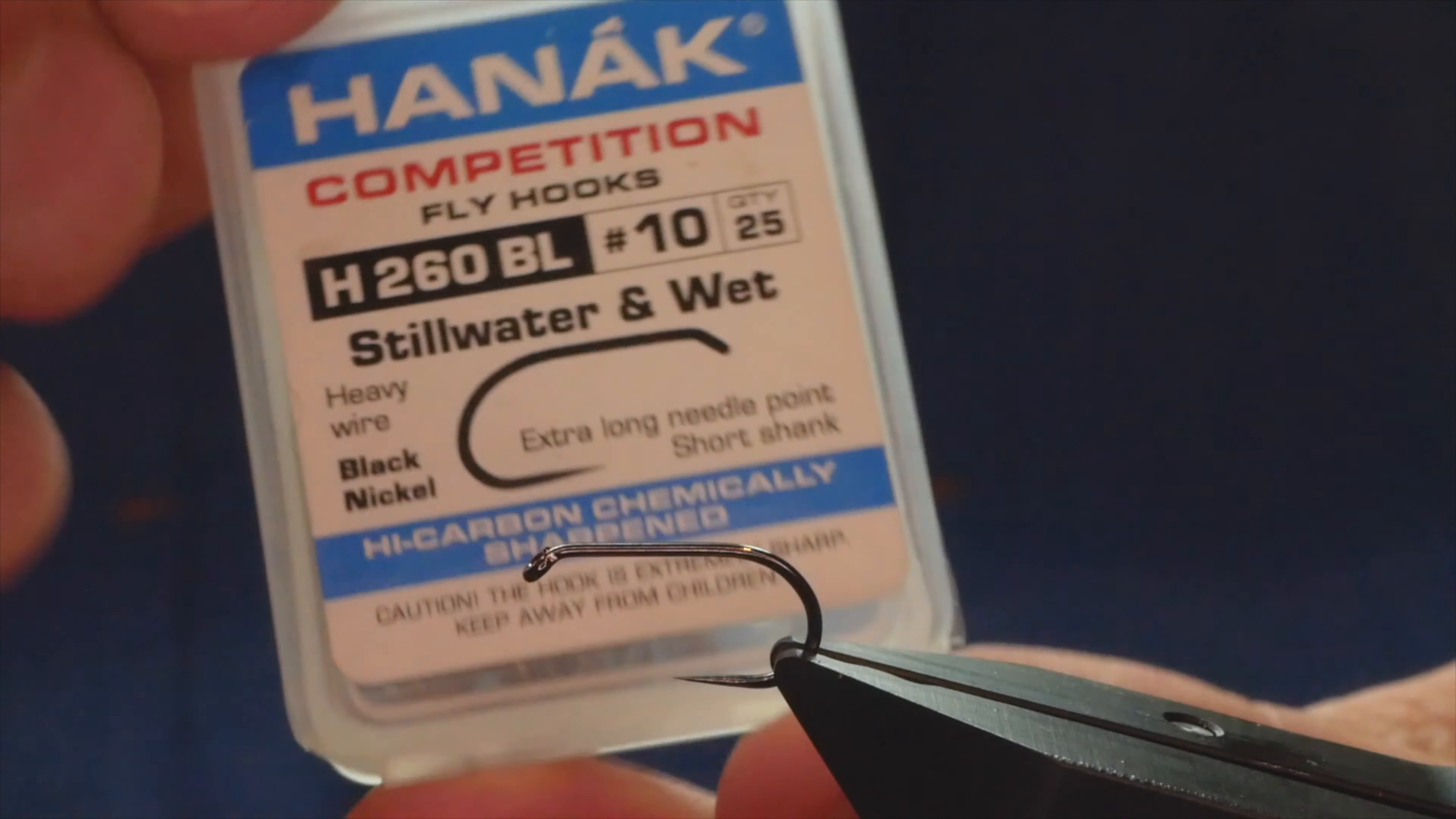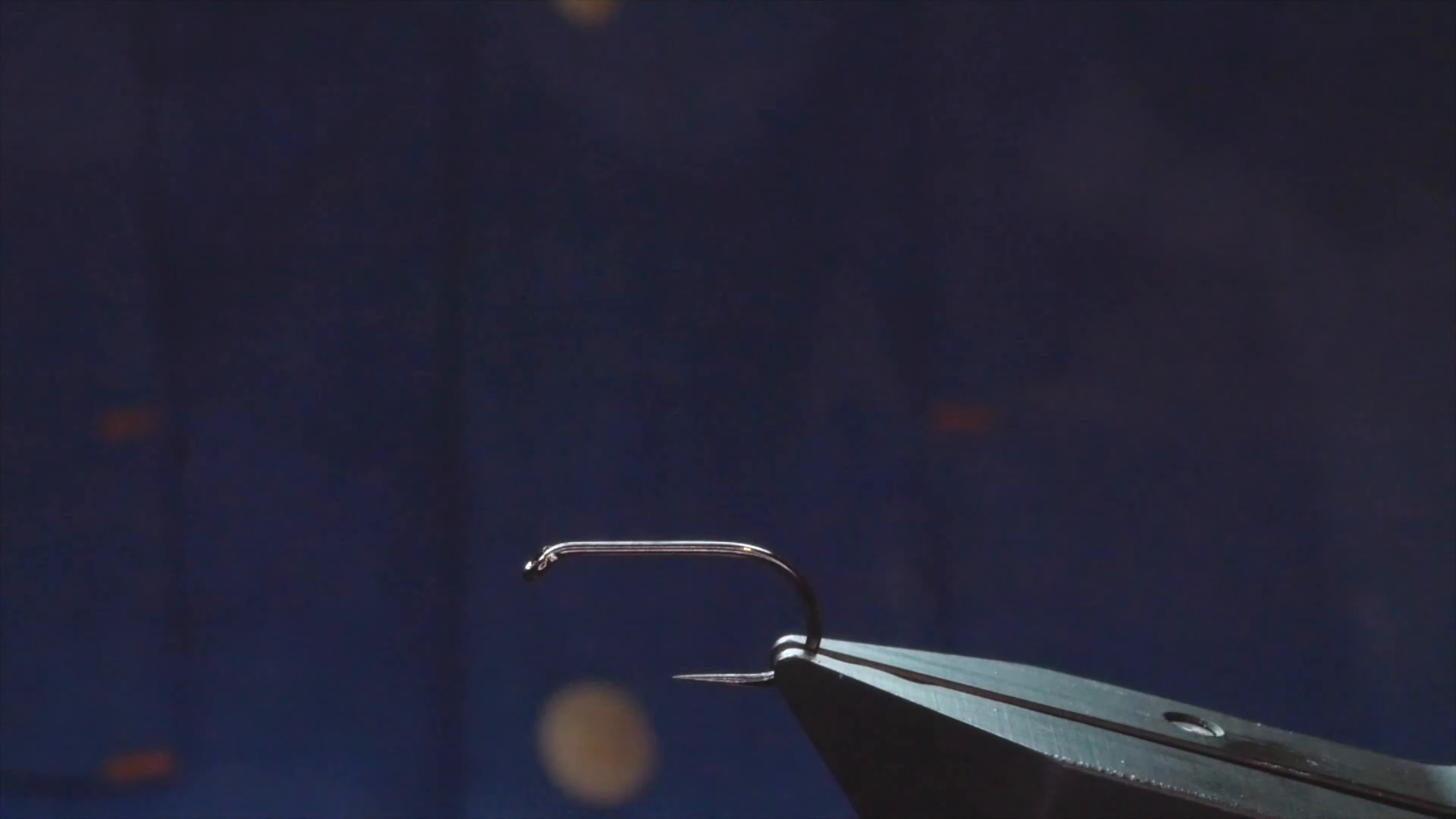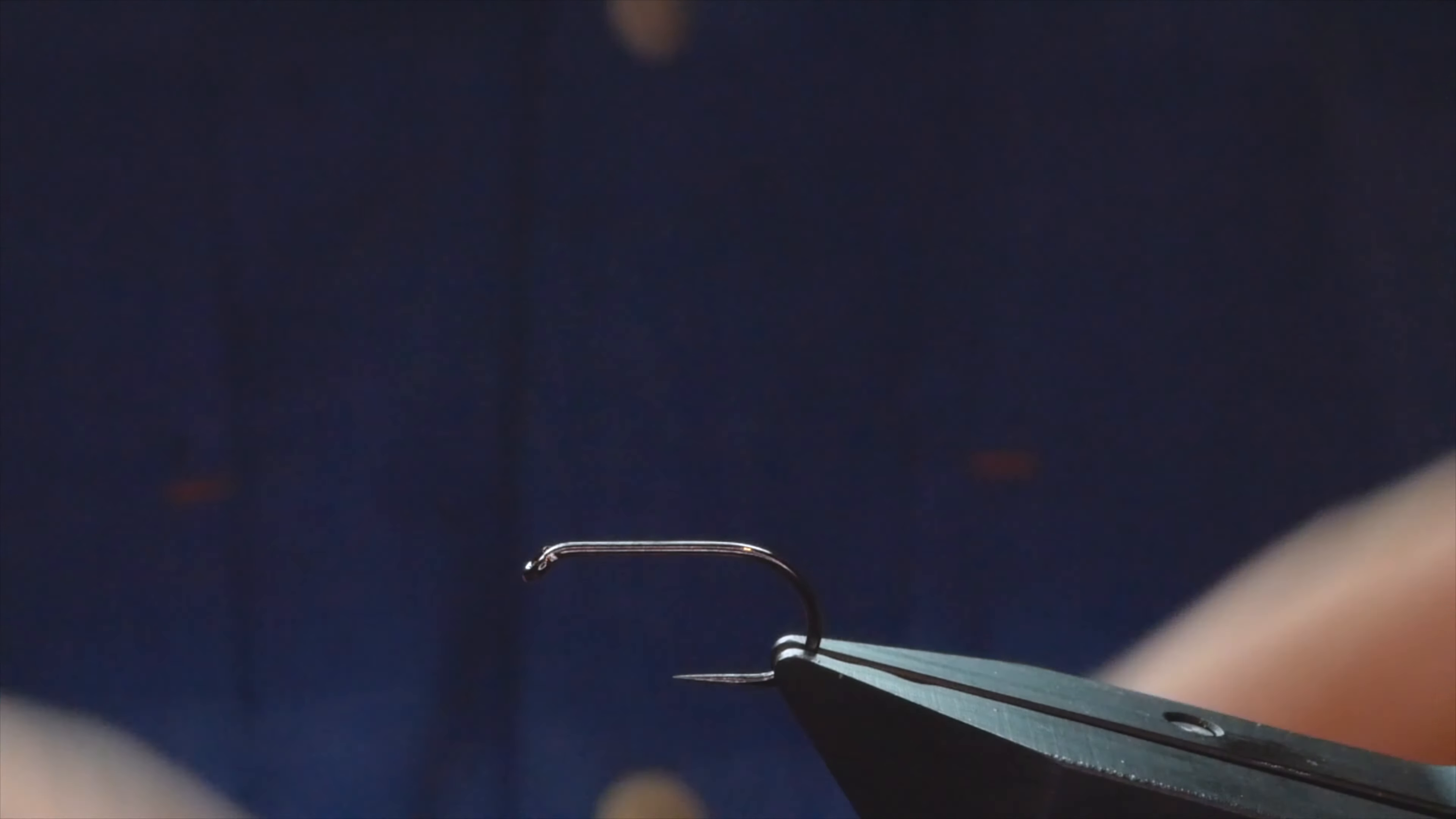The hook in the vise is a Hanak H260 barbless hook, size 10, on heavy wire in black nickel. The thread I'm using today is from Semperfi, the classic thread at 12-0, and as you can see it's a white thread.